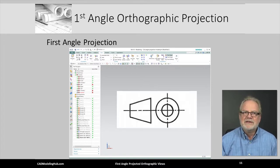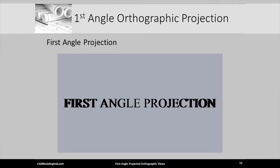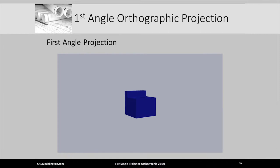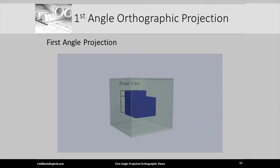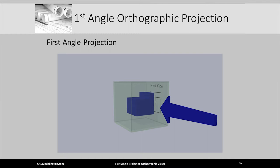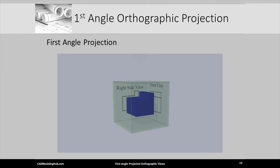To further illustrate the ISO first angle view projection, I have created a simple doorstop and placed it inside of a large blue arrow. The large blue arrow is our viewing direction. Notice the white surfaces visible from the front are projected to the back wall of the glass cube — this 2D view is called the front orthographic view. Repositioning our viewing direction to the right side of the doorstop, we again identify the visible white surfaces projected onto the wall of the glass cube. This 2D view is labeled the right side view.